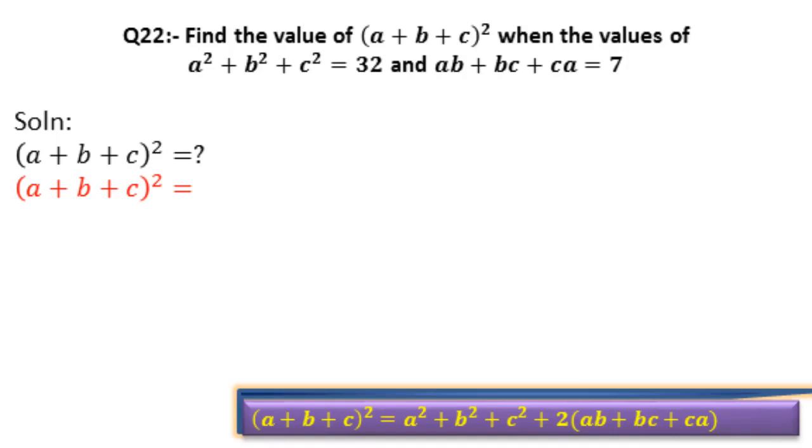And we will apply formula on it. Formula is written equal to. Look at the question above. Value of A square plus B square plus C square is 32.